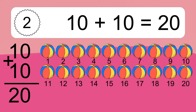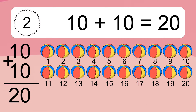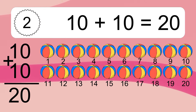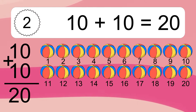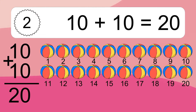Let's count it. 1, 2, 3, 4, 5, 6, 7, 8, 9, 10, 11, 12, 13, 14, 15, 16, 17, 18, 19, 20.